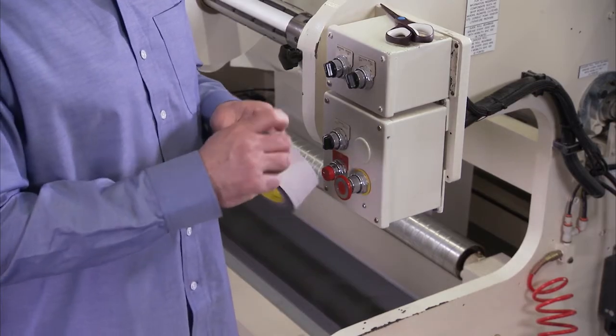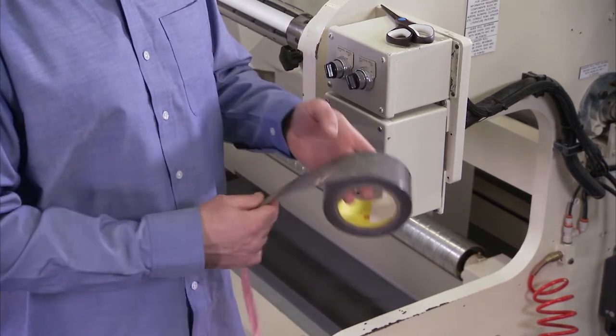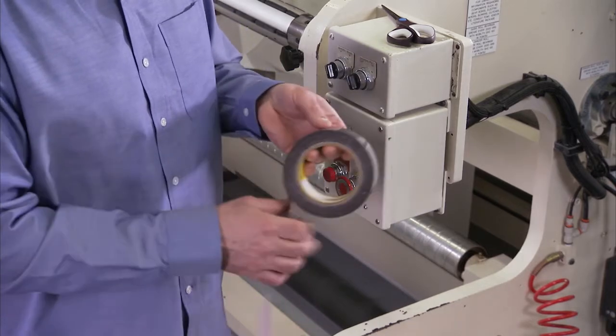If it should ever appear that the roll of tape doesn't have any adhesive on it, that means that the tape has been pre-separated all the way around and torn off, leaving no exposed adhesive.